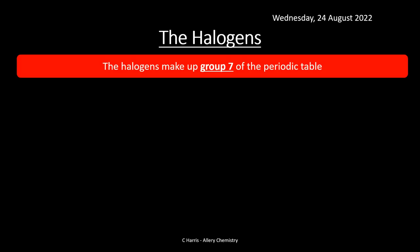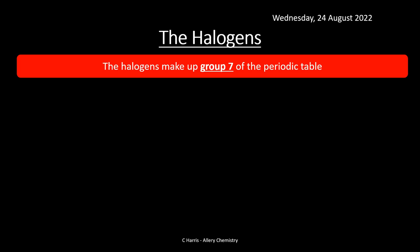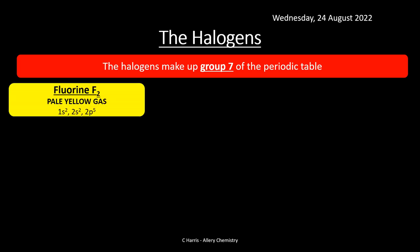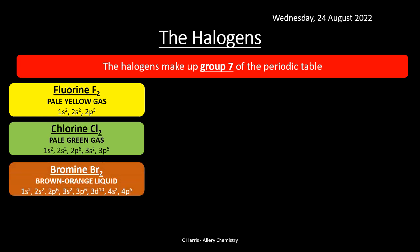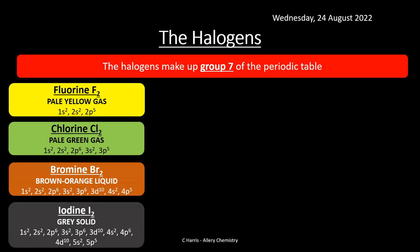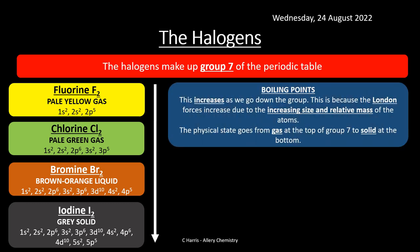Halogens make up group 7, also known as group 17 of the periodic table. Fluorine is at the top — a pale yellow gas with electron configuration 1s² 2s² 2p⁵. Chlorine is a green gas, bromine is a browny-orange liquid at room temperature and pressure, and iodine is a gray solid. These are the main elements within the halogen group.